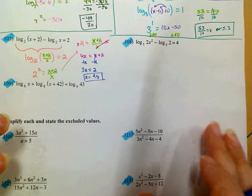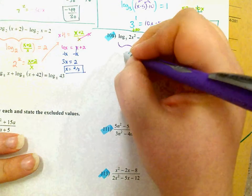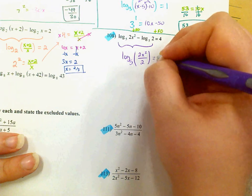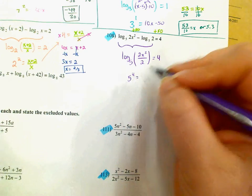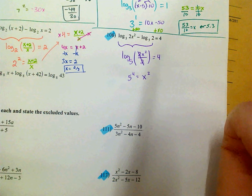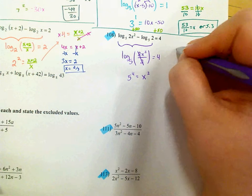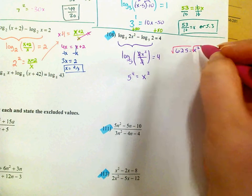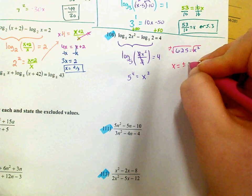On 108, I'm going to combine these two logs using division. So log base 5 of 2x squared divided by 2 equals 4. Converting to an exponential: 5 to the 4th equals 2x squared over 2. The two's simplify out, leaving x squared. 5 to the 4th is 625, so 625 equals x squared. Taking the square root gives plus and minus 25.